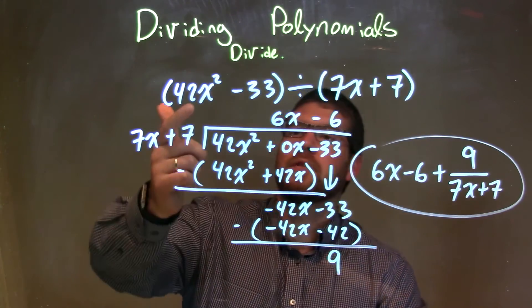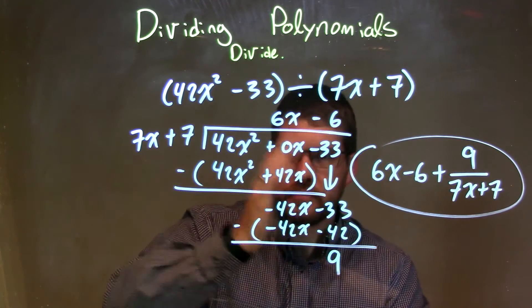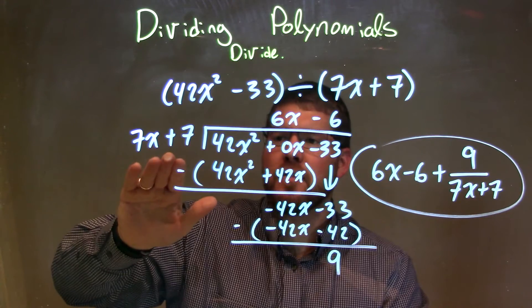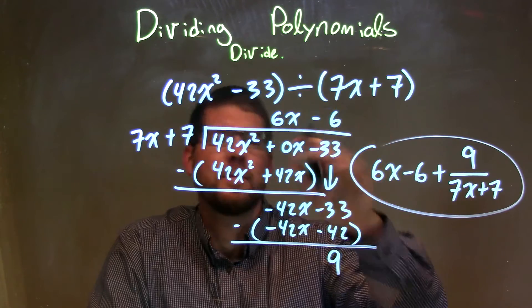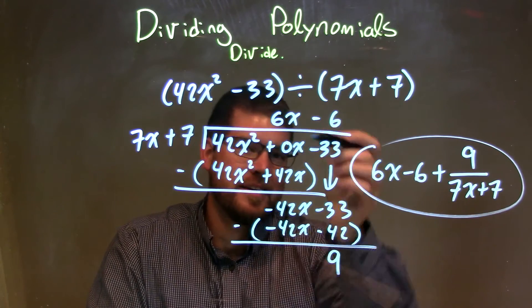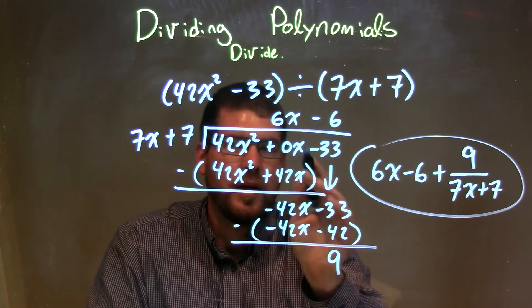So let's recap. We're given 42x squared minus 33 divided by 7x plus 7. When we divide it, I have my divisor here, it goes into my dividend. And when I space up my dividend, first I left a space there to kind of see what you can do. But then it's like, well, it does look easier. It's kind of easier to subtract and add if we have a 0x place value there.